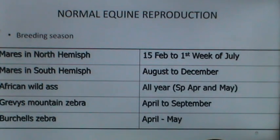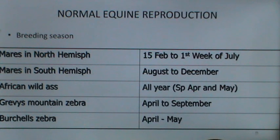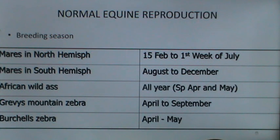This table shows normal equine reproduction. The breeding season for mares in the northern hemisphere starts from the 15th of February to the first week of July. For mares in the southern hemisphere, the breeding season ranges from August to December. For the Asiatic and African wild ass, the breeding season is all year, especially April and May. For Grevy's and mountain zebra, it extends from April to September, and for Burchell's zebra, from April to May.